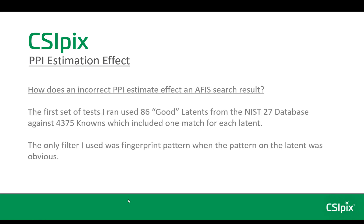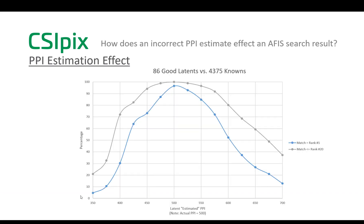The first set of tests I ran used 86 good latents from the NIST27 database against 4,375 knowns, which included one match for each of those latents. The only filter I used for this research was fingerprint pattern when the pattern on the latent was obvious. This graph shows the results of those APHIS searches. The horizontal axis has the PPI estimates, and the vertical axis is the percentage of actual matches found by the APHIS search. The blue line shows the percentage of latents that had actual matches with the highest score out of the 4,375 knowns.